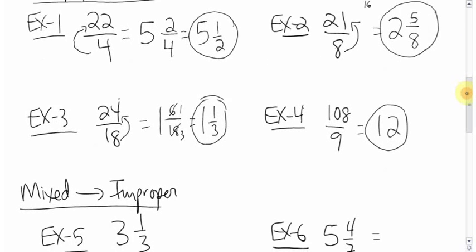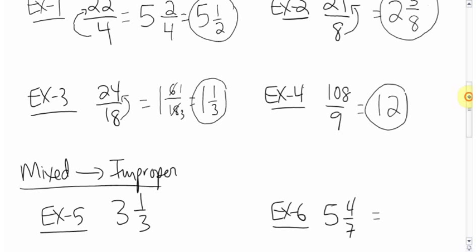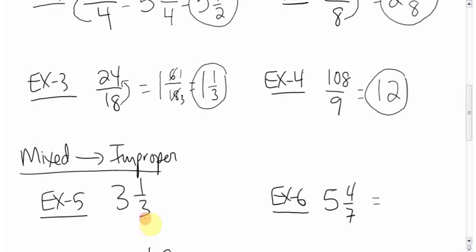Okay, the other way around, mixed going to improper. A little cycle here I'll show you. What you do is you take the bottom number, you multiply it by the big number, or the whole number, so the denominator times the whole number, or bottom times big,